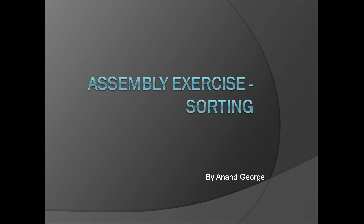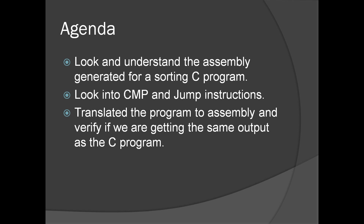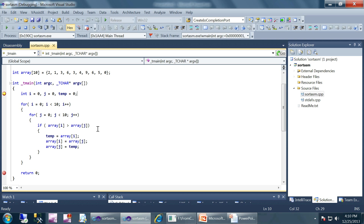In this presentation we're going to see an example of assembly language programming which is sorting. We're going to understand the assembly language generated for a sorting program, see compare and jump instructions, and translate the program to assembly language from C using the same instructions generated by the compiler.